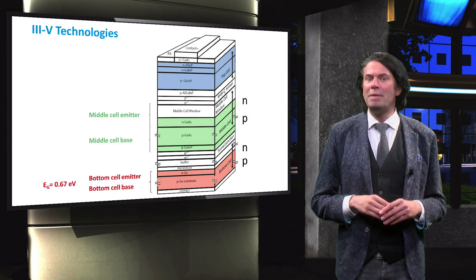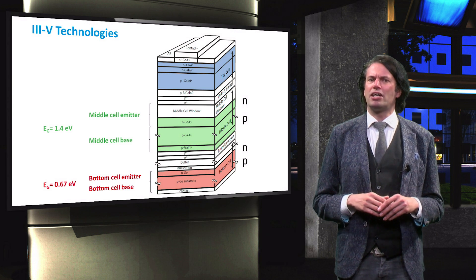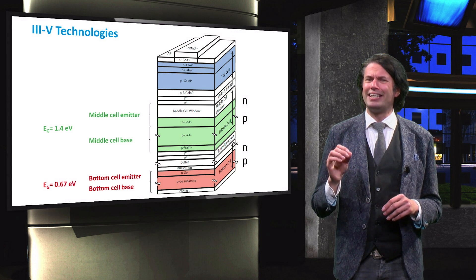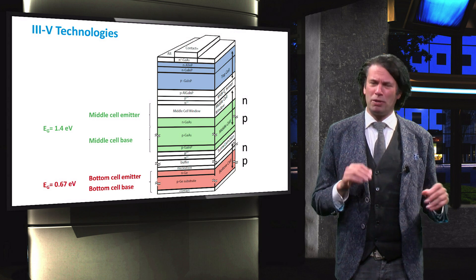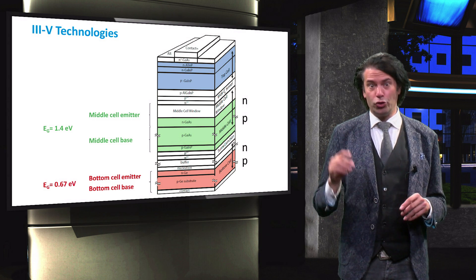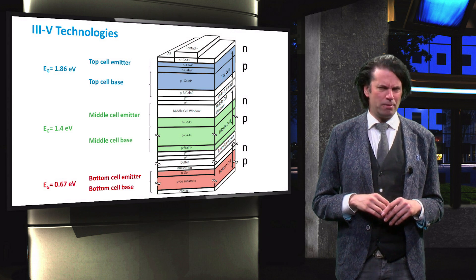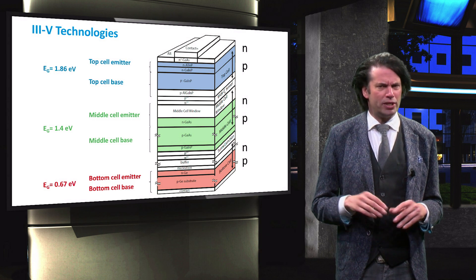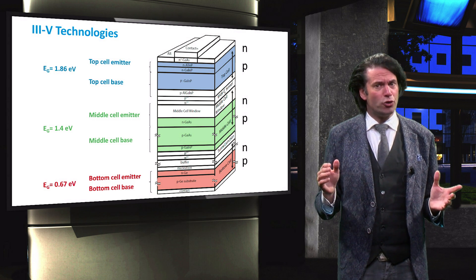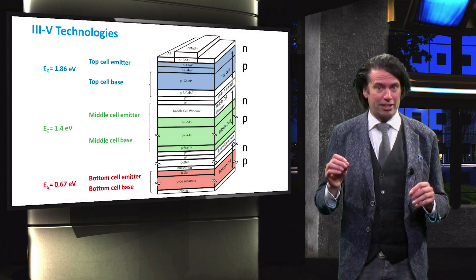The middle cell is based on gallium arsenide, with a band gap of about 1.4 eV. The top cell is based on gallium indium phosphide, with a band gap in the order of 1.86 eV.